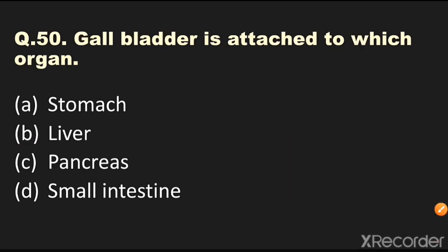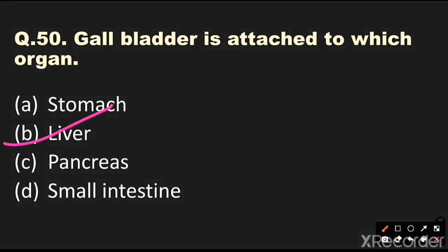Question number 50: Gallbladder is attached to which organ? Options are stomach, liver, pancreas, or small intestine. The answer is liver — gallbladder is attached to the liver.